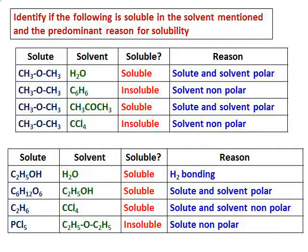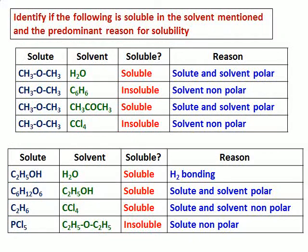And we have PCl5 in diethyl ether, C2H5OC2H5. It will be insoluble because the solute is polar while the solvent is non-polar.